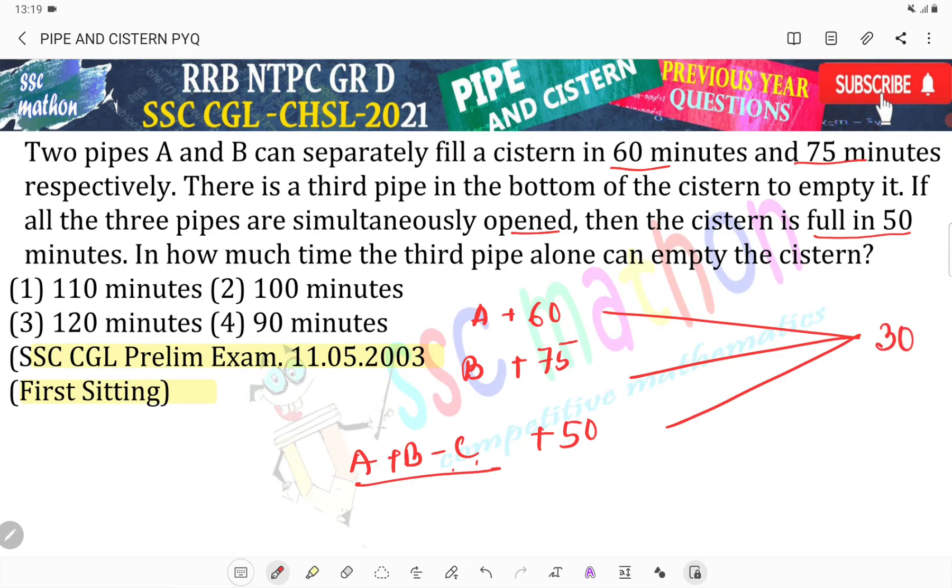So how much is the total unit of work? 300. 60 units of work in 60 minutes to fill up.